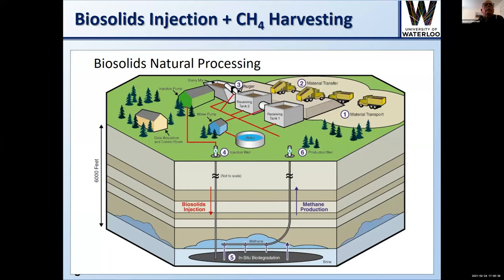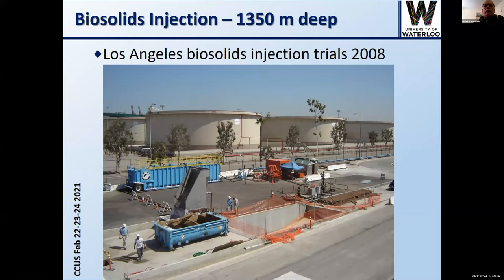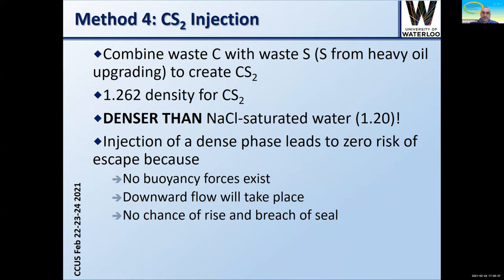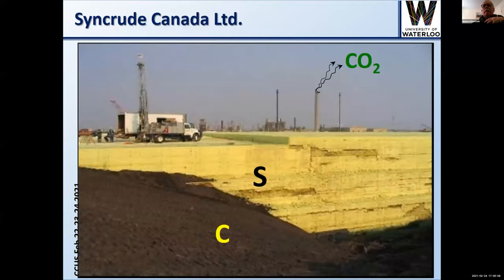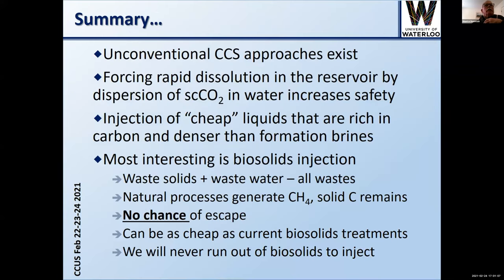This is the biosolids injection site in Los Angeles. Method four: if we can find a liquid denser than saline aquifer water — such as carbon disulfide made cheaply — it would be much more stable than any other injection process because it is negatively buoyant and will sink. At the Syncrude site in Canada there is waste sulfur, waste carbon, and waste CO2, making this potentially attractive.